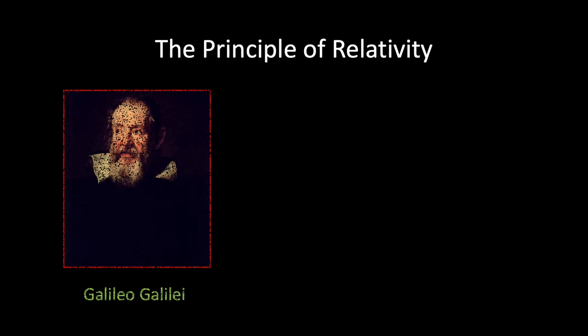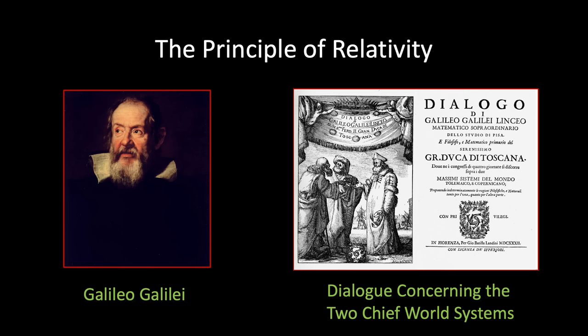The principle of relativity was in fact introduced by the great Italian scientist Galileo, who used it in his Dialogue Concerning the Two Chief World Systems, published in 1632. The dialogue consists of an imaginary conversation between three characters. One of them, Salviati, tried to convince the other two of the validity of the Copernican theory that the earth orbits the sun. Another character, Simplicio, puts forth various arguments against the Copernican view, one of which is that the earth can't be moving because it doesn't feel like we're moving — surely if the earth was moving, we'd know.